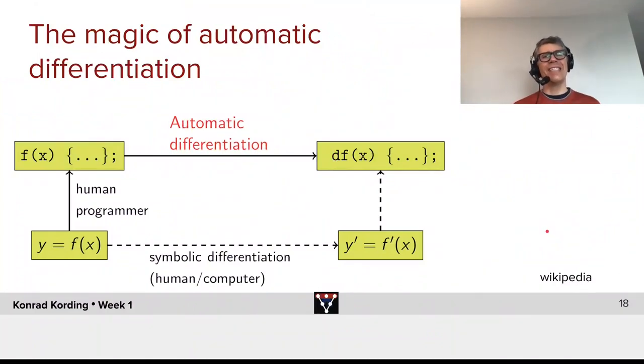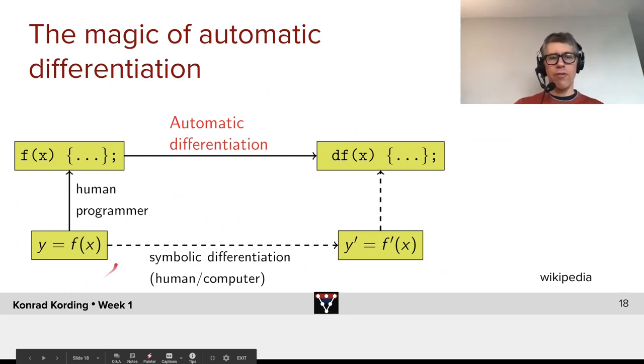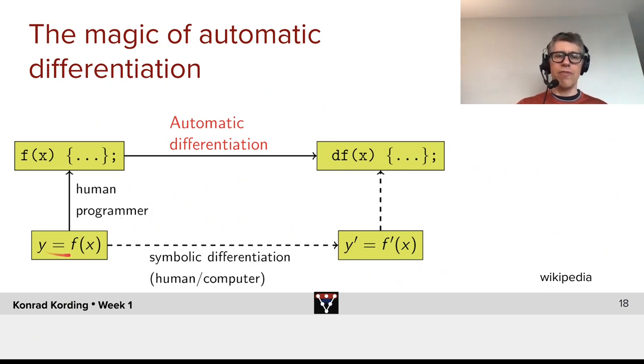So that you don't have to do this again, let's talk a little bit about the magic of automatic differentiation. What we have in deep learning is a function y that depends on various parameters, y is f of x. And you generally have a human programmer take this function and convert it into, in your case, a PyTorch implementation of that function.